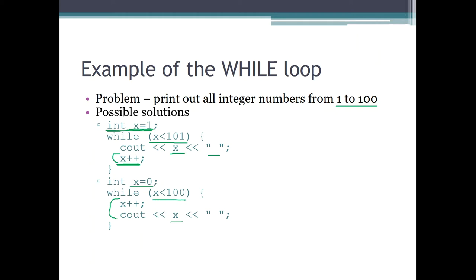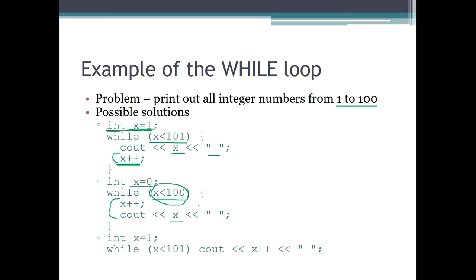The condition has also changed in this version: we end execution when x is less than 100 becomes false. For example, when x is 99 this is still true — we increase x to 100 and print 100, which is the last number we need. Then we go back and check: 100 less than 100 is false, so the while loop ends. We don't enter the loop body again to print 101, so the borders are correct.